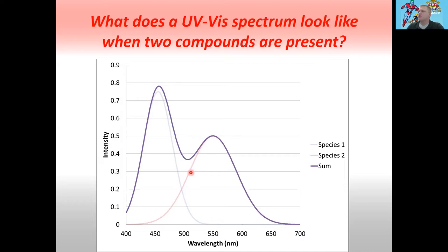For example, if we were going to try and measure the concentration of species two just by looking at this single peak right here, we could probably do a good job because the peak for species one dies out just before there. But this peak for species one — you'll notice it's now slightly higher than it was before, and it's actually slightly shifted to the right because of adding this overlapping peak. So what do we do in a scenario like this when we have two species and we want to extract useful data? We're going to cover that math right now.